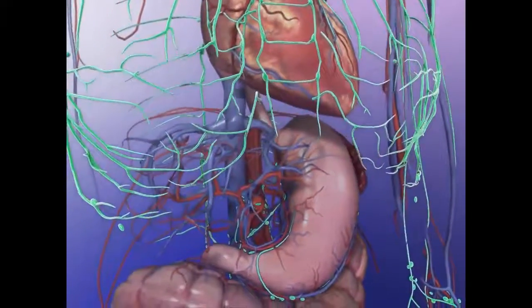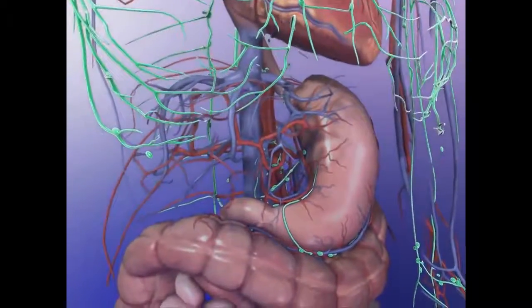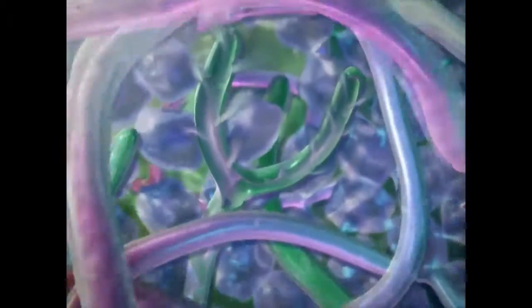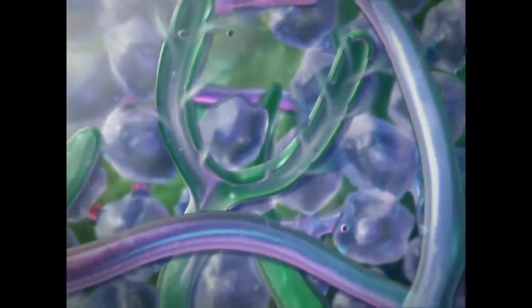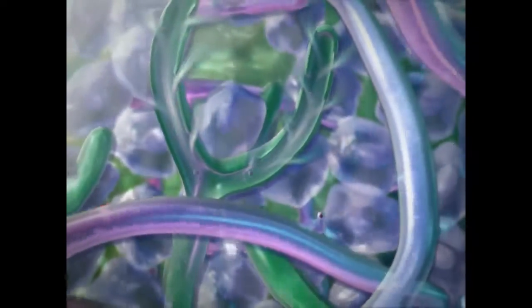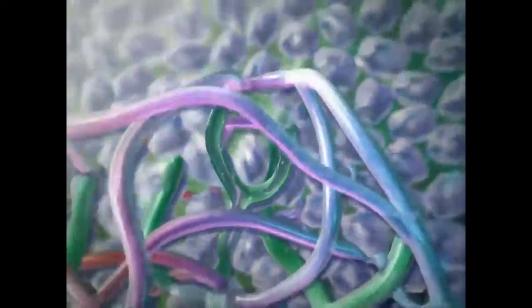Tissues in the body are surrounded by lymphatic vessels and capillaries of the circulatory system. As water and substances are exchanged between tissues and the bloodstream, unwanted substances enter the lymphatic network and travel towards nodes.